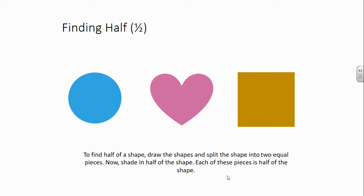We drew our line either horizontally, vertically, or diagonally. Once you have drawn the line and split the shape into two equal pieces, what I would like you to do is shade in one half of the shape. Then you'll be able to see each of these pieces is half of the shape.